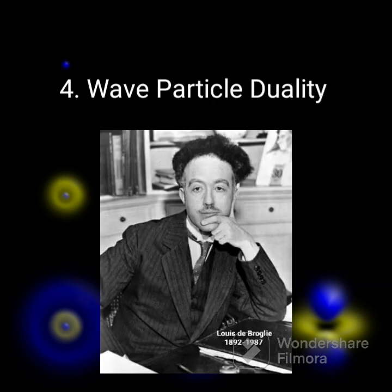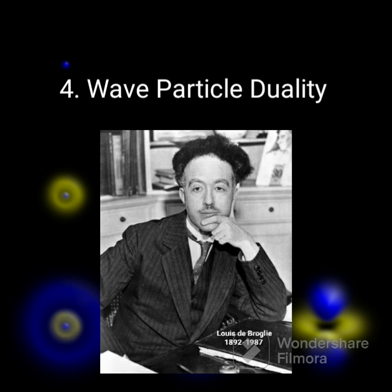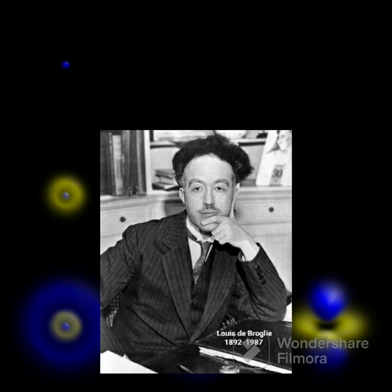4. Wave-Particle Duality, 1920s: French physicist Louis de Broglie proposed that particles like electrons exhibit wave-like properties, similar to light. This concept, known as wave-particle duality, suggested that electrons could exhibit both particle and wave behaviors, challenging traditional notions of particle behavior.